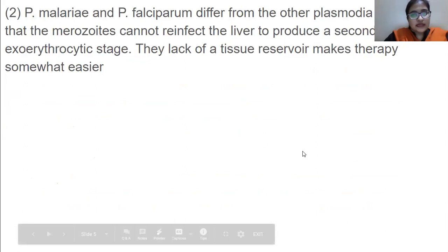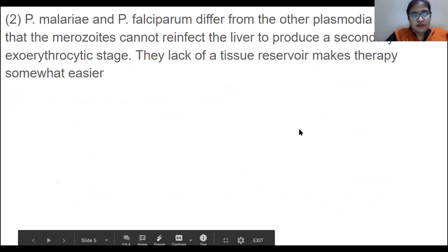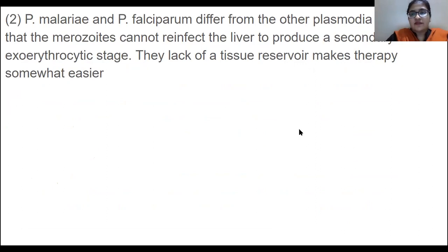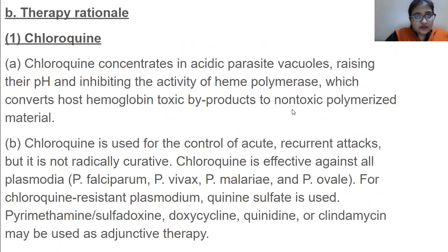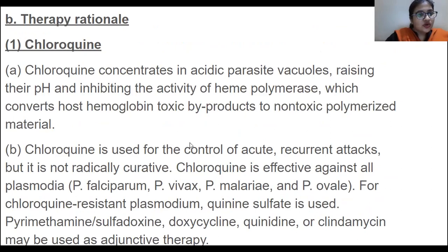P. malariae and P. falciparum differ from other Plasmodium species in that the merozoites cannot re-infect the liver to reproduce a secondary exo-erythrocytic stage — there is a lack of a tissue reservoir. This makes therapy somewhat easier.